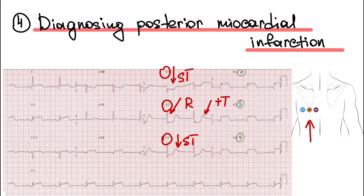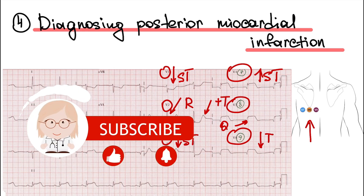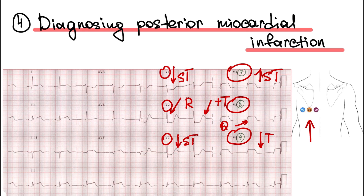At leads V7, V8, and V9, we can see the mirror changes, such as ST segment elevation, Q wave, and negative T wave. Thank you for watching my video. If you want more videos about ECG, subscribe to my channel.